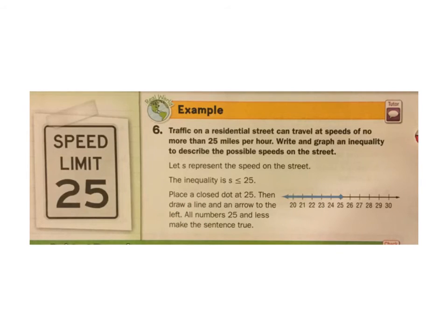Okay, let's see one more example. Traffic on a residential street can travel at speeds no more than 25 miles per hour. Write and graph an inequality to describe the possible speeds on the street. Let s represent the speed on the street. So the inequality is the speed must be less than or equal to 25. Can't go any higher than 25. So then to graph it, you put a solid dot on 25, and you go all the way to the left, which shows that it's under 25, and will make this inequality a true statement.